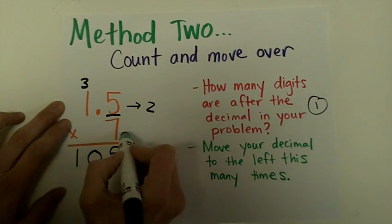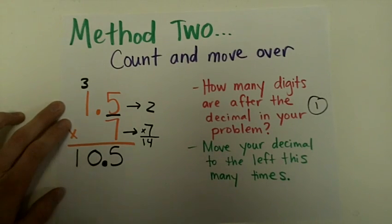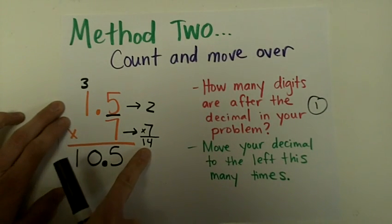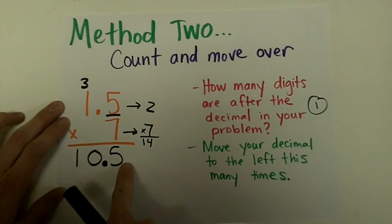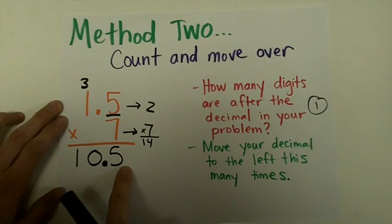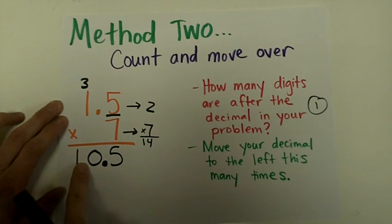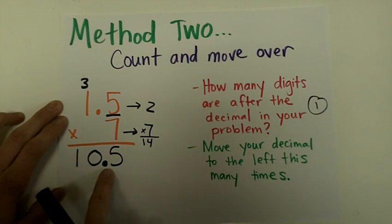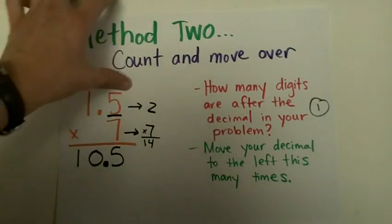I imagine the decimal is at the end of the product and move it to the left one time, because I had one digit after the decimal — so it goes here. Then I check: 1 and 5 tenths rounds to 2, and 7 stays as 7. 2 times 7 would make 14. My answer of 10.5 makes a lot more sense than 105 — way too much — or 1 and 5 hundredths, which is way too small. Let's do 4 more practice problems practicing these steps of the algorithm.